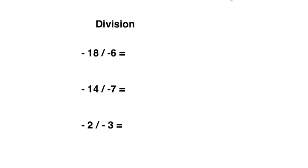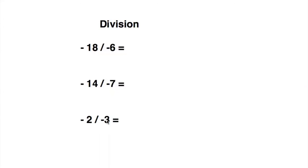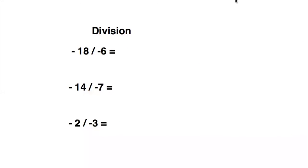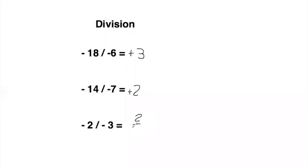Now that you've had time to try these problems, we will go over them. First one: 18 divided by six — you know two negatives divided by each other gives a positive, so the answer is positive three. For the next one, 14 divided by seven is two, so the answer is positive two. This last one is a bit trickier: two divided by three is a fraction — it would be two over three. The same rule applies: positive two over three, because two negatives divided by each other give a positive.